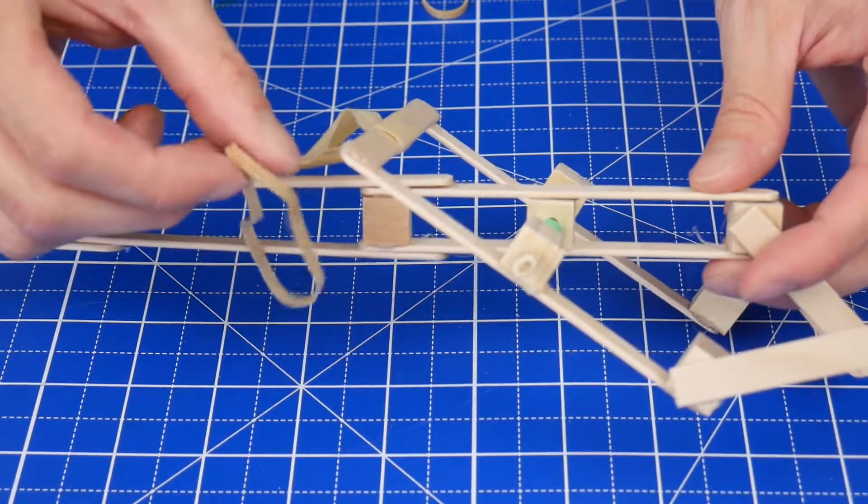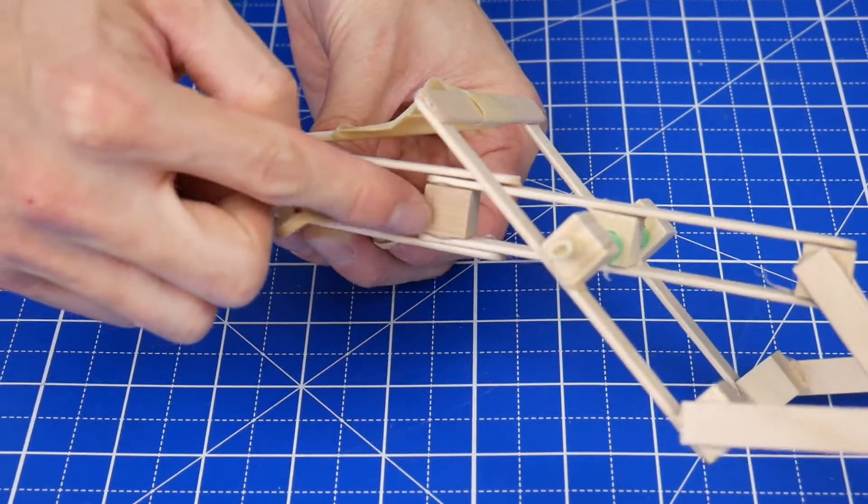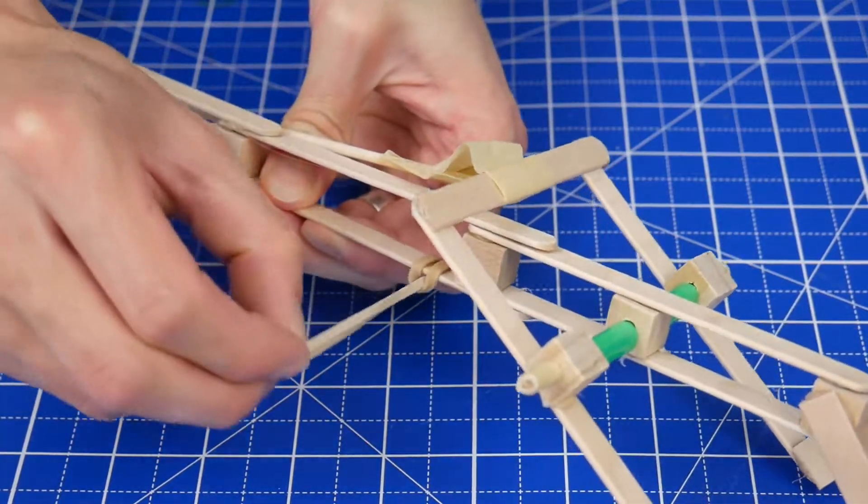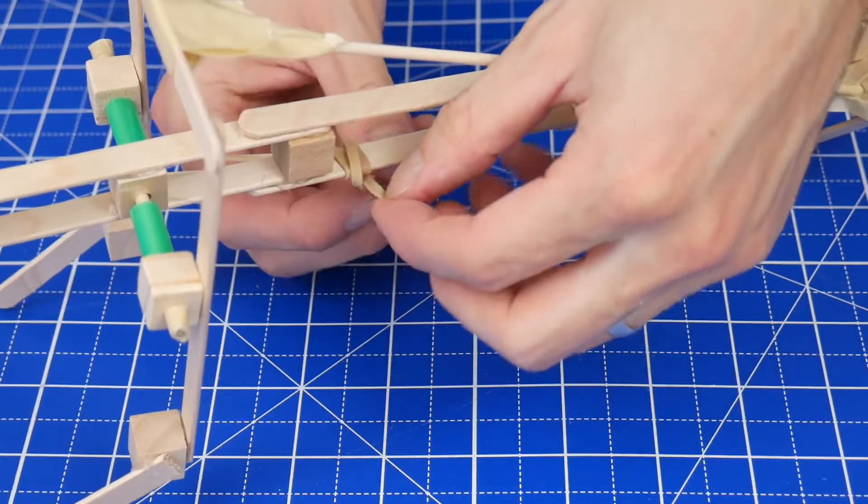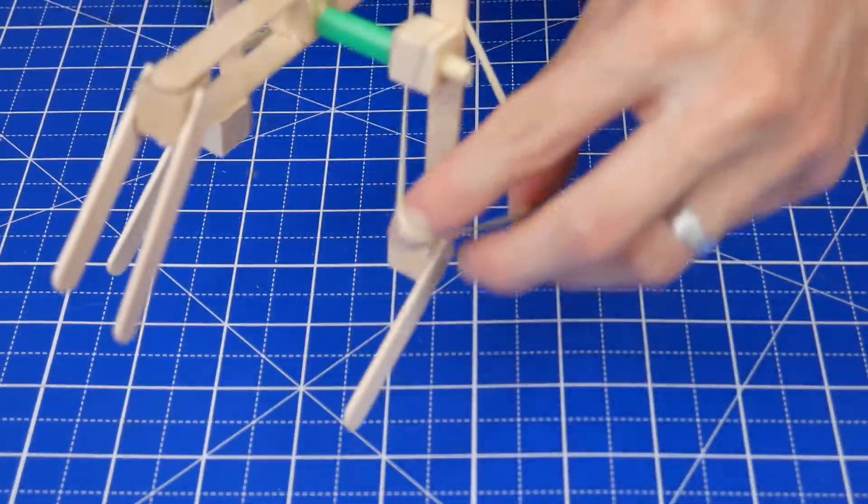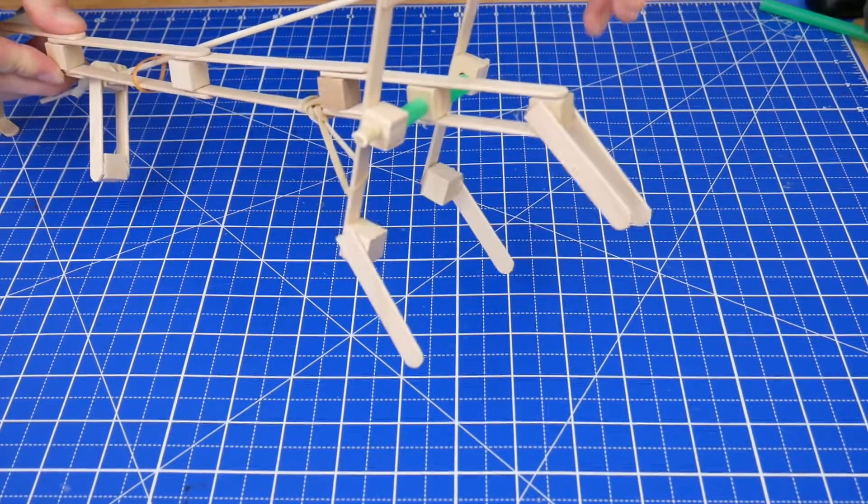Next, we're going to make the grabber open up automatically with rubber bands. Tie two rubber bands behind this cube using a lanyard hitch knot. Then loop the rubber band around one of the outside fingers. Now, whenever the grabber is closed, it will automatically open back up.